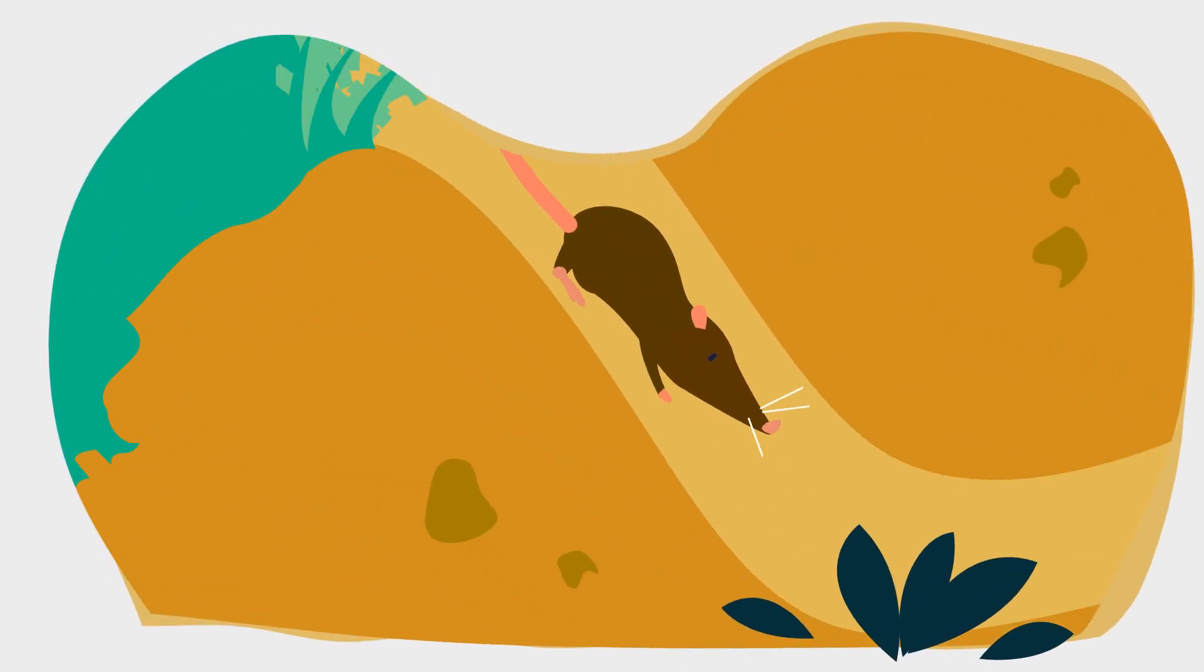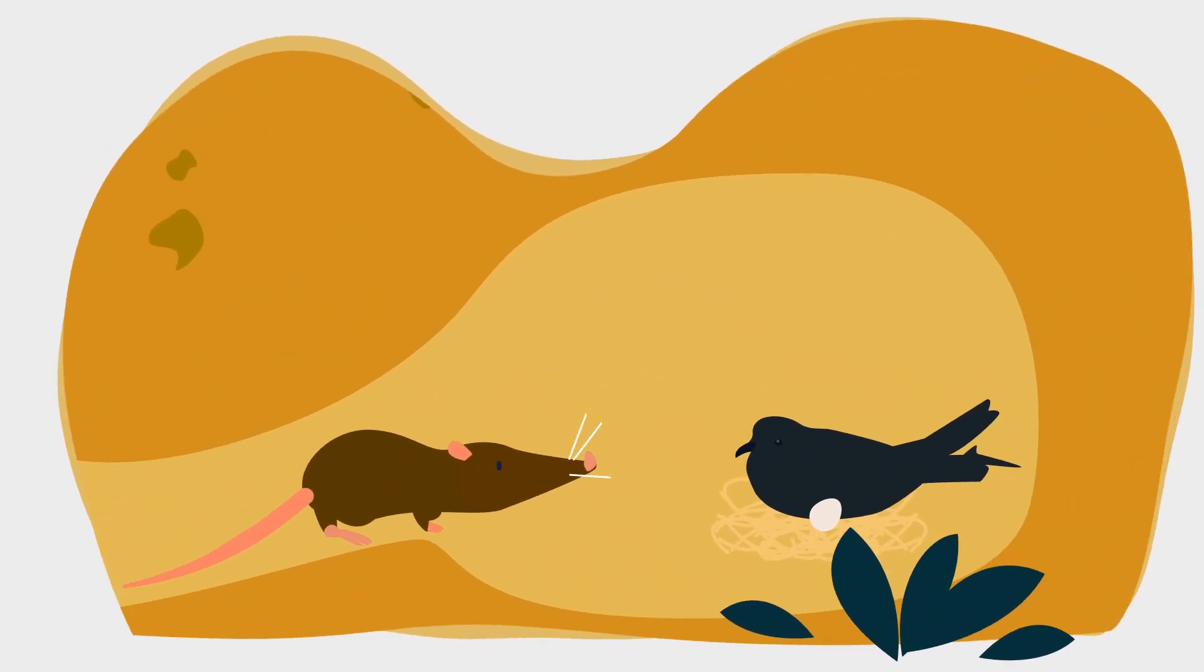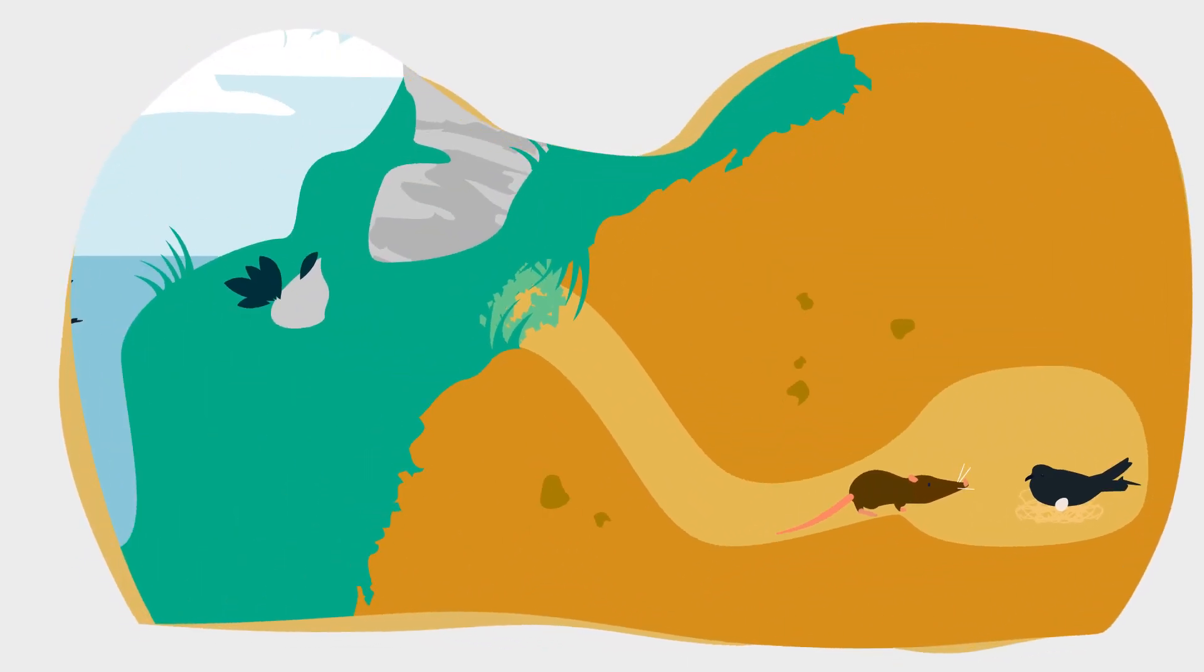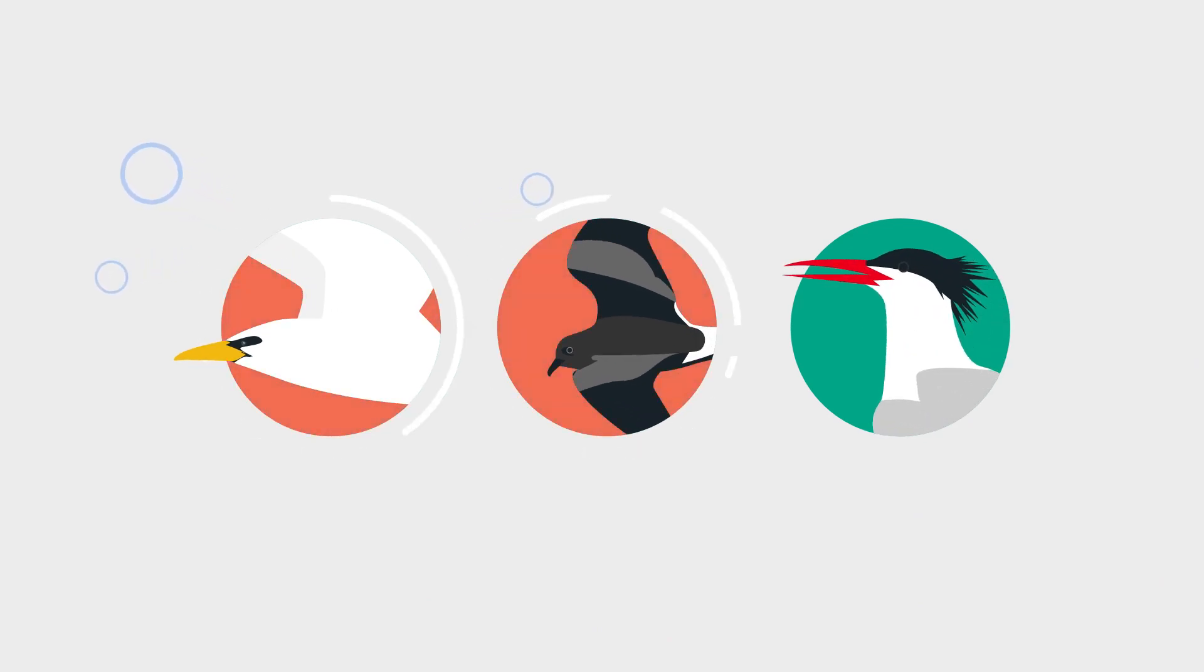Invasive alien species, such as rats and cats, at breeding colonies represent a huge threat that affects almost two-thirds of all seabird species.